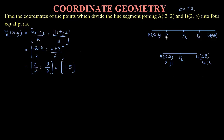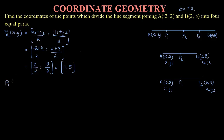Now to find the coordinate of P1, observe that P1 is the midpoint of line segment A and P2. Point A is (−2, 2) and P2, which we just calculated, is (0, 5). Let A be (X1, Y1) and P2 be (X2, Y2). So P1(x, y) equals the midpoint formula applied to these two points.